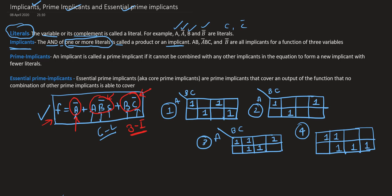Now how many implicants are there in the first example? This one gives me AND of three literals — A bar, B bar, C bar — so I call it an implicant. This will also give AND of three literals. So there are four implicants. Similarly, there would be five implicants, because each one is capable of giving one implicant.